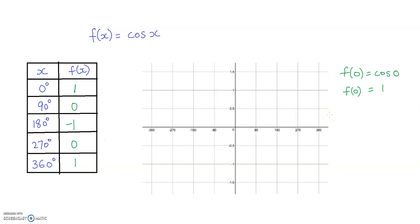Now I'll plot these points on the grid. I'll label the x-axis as x in degrees, the y-axis as f of x, and write the title as cosine x. When x is 0, f of x is 1. When x is 90 degrees, f of x is 0. When x is 180 degrees, f of x is negative 1. When x is 270 degrees, f of x is 0. When x is 360 degrees, f of x is 1. Then I'll connect the points.